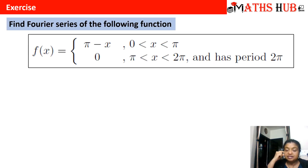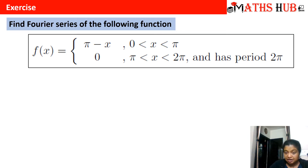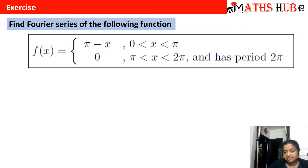Calculate the Fourier series for the following piecewise function: f(x) = π − x for 0 < x < π, and f(x) = 0 for π < x < 2π. In the last question the function was continuous over the entire interval. Now the total interval is from 0 to 2π but there is a discontinuity at the point π. The function has been broken into two subintervals: on 0 to π it is defined as π − x, and on π to 2π it is defined as 0.